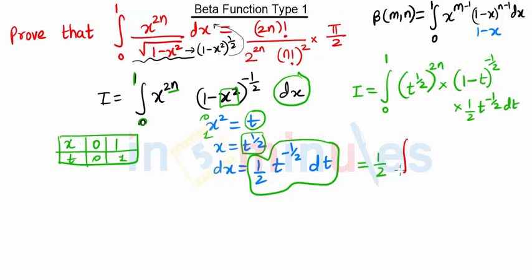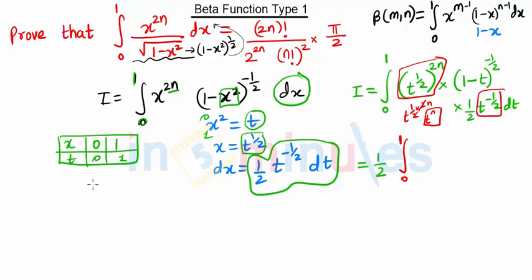We take the half outside the integration as it is a constant, giving us half times the integral from 0 to 1. The term (t raised to half) raised to 2n simplifies: the 2 and 2 cancel, giving t raised to n. Combining t raised to n and t raised to minus half gives t raised to n minus half.